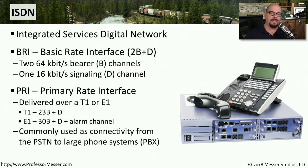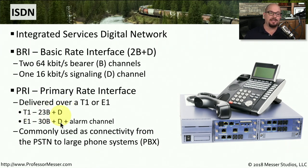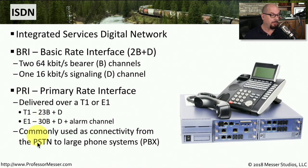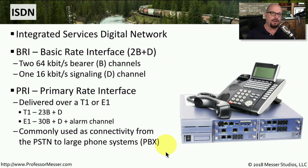A larger scale ISDN is the Primary Rate Interface, or PRI, usually delivered over a T1 or E1 connection depending on your country. A T1 supports 23 bearer channels and a signaling channel, while E1 supports 30 bearer channels, a signaling channel, and a separate alarm channel. Although you could use these bearer channels for internet connectivity over a PRI, it's also common to see PRI used for voice channels coming from the public switched telephone network, connecting to a private branch exchange inside your company for legacy voice communication.